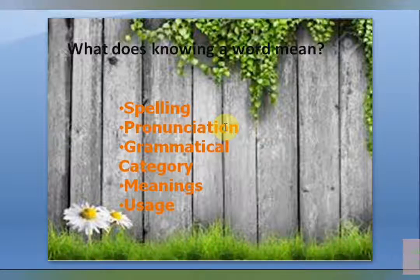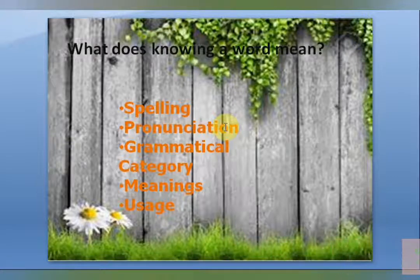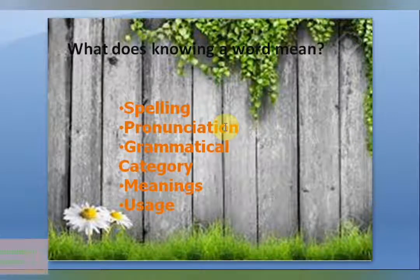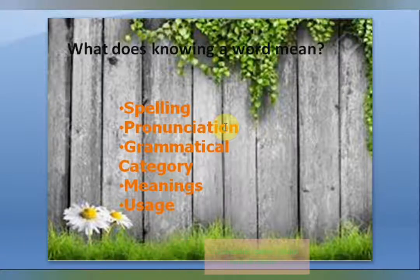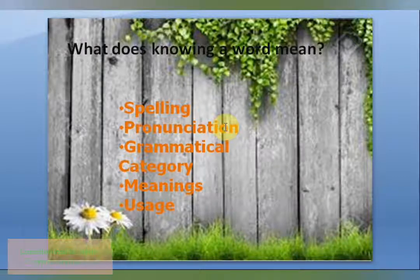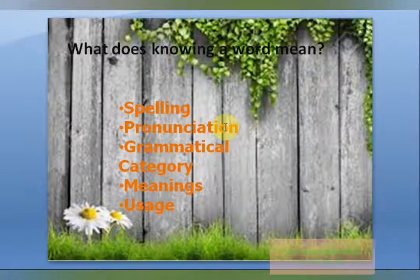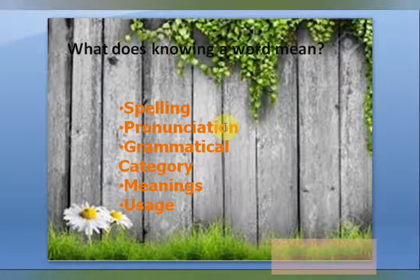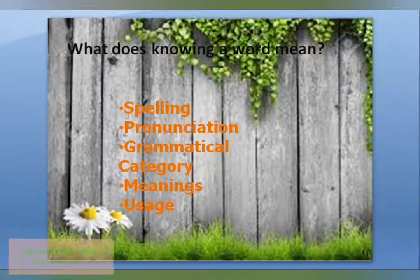Knowing a word means knowing how it is spelled, knowing how it is pronounced, knowing the grammatical category or categories of the word — that is parts of speech — knowing the grammatical associations of the word, knowing lexical associations, knowing which language register or domain the word is generally used in (technical or general), knowing its meanings (positive, negative, or neutral, formal or informal), and knowing the contexts and uses of that particular word.